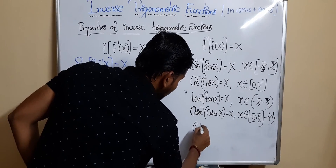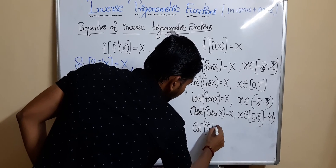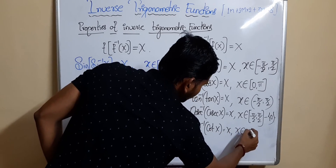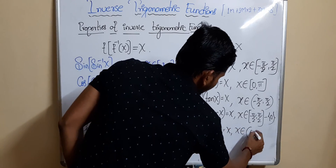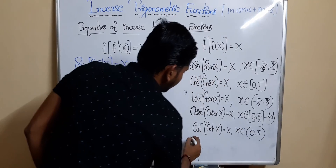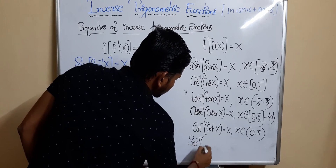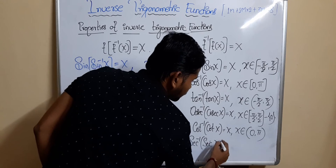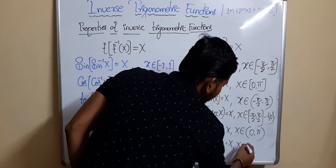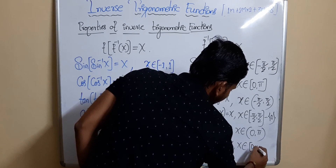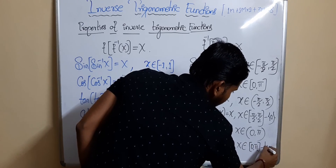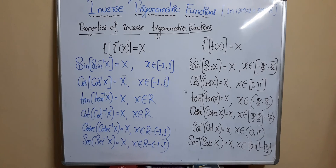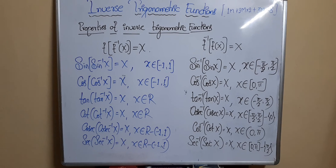cot⁻¹(cot(x)) = x, where x belongs to the open interval (0, π). The last one: sec⁻¹(sec(x)) = x, where x belongs to the closed interval [0, π] excluding π/2. I think you have understood the properties.